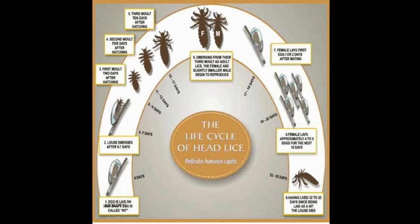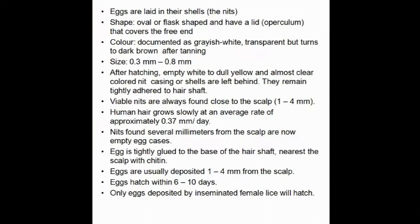The life cycle: egg (nit) lands on the hair, the louse emerges after six to seven days, then undergoes first, second, and third molts. Female and male adults mate and lay eggs after seven days. These eggs attach to the hair shaft again and the cycle continues. The adult louse dies after 30 to 35 days. The nymph stage lasts one to two weeks before forming adults.